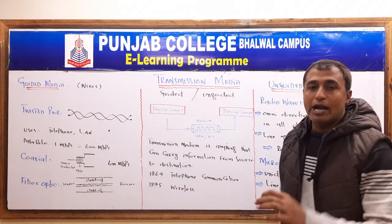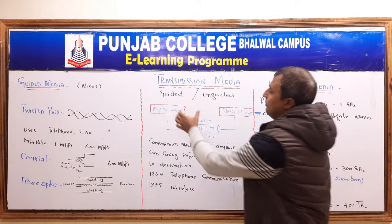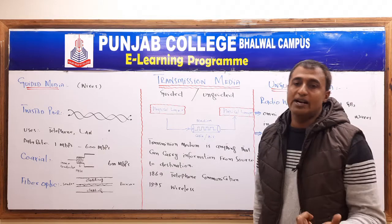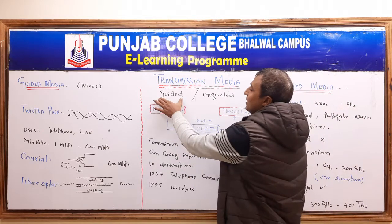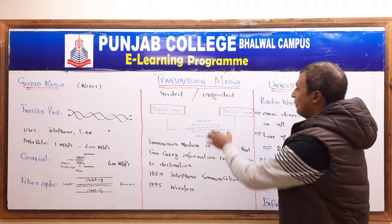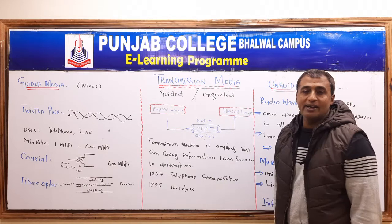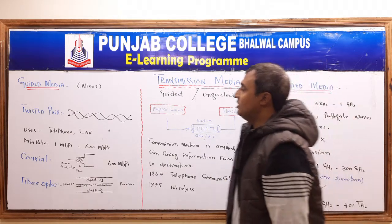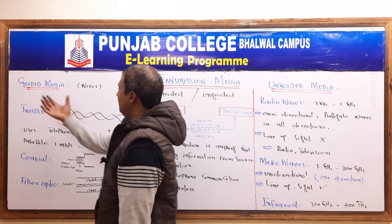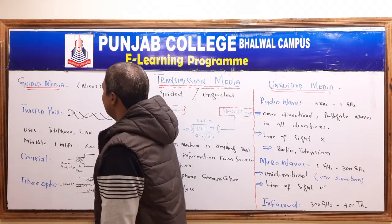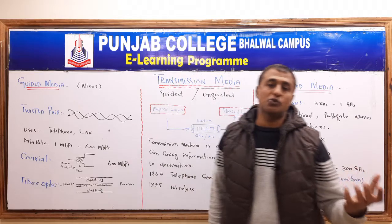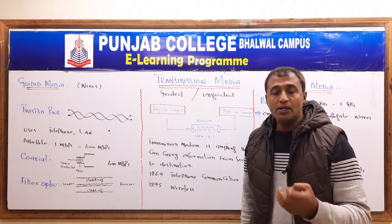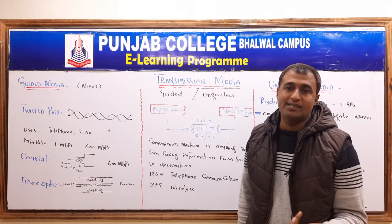We have two types of media. The first one is called guided media, and the second one is called unguided media. Inside guided media we have wires, and inside unguided media we have signals. Guided media — with the help of wires, our data travels from source to destination — that is called guided media. It can also be called physical media.